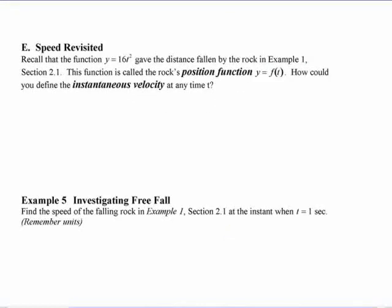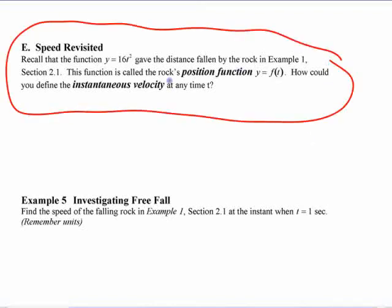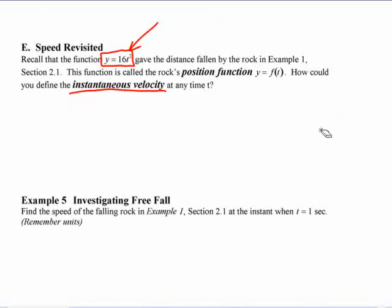I think we've got ahead of ourselves before and we can already do this, but this is the problem we started with in this whole unit. We had something falling according to that equation in feet and seconds. How could you work out its instantaneous velocity at any time t? You can set up the same thing, right? Slope of the tangent. Okay, work out the slope of that tangent. Tangent line, that's the speed.